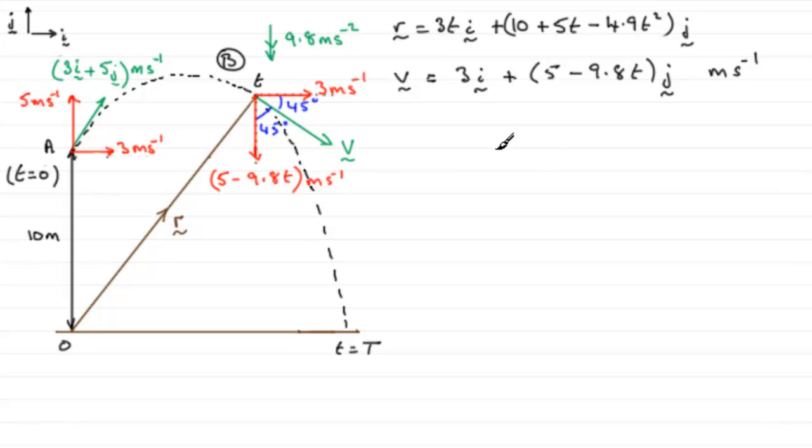Now if we drew a velocity triangle for this particle at B, it'll look something like this. We'll have the velocity downwards as being 5 minus 9.8T, and that will be also in meters per second. So the resultant velocity would be V, and it would act like that, at an angle 45 degrees below the horizontal.